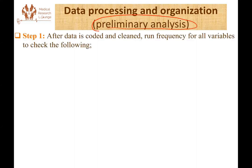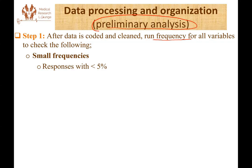In data processing and organization, the first thing we do is run frequency for all of our variables and check two important things. The first is if we have small frequencies. If your variable has one response category which is less than 5%, then this counts as a small frequency.